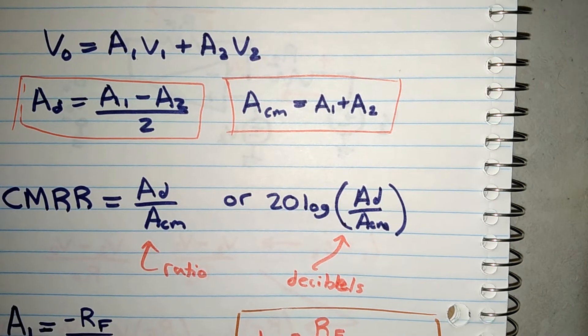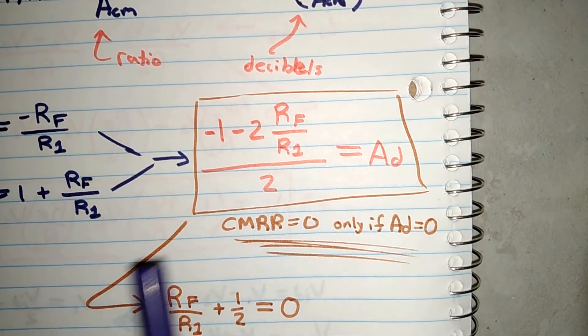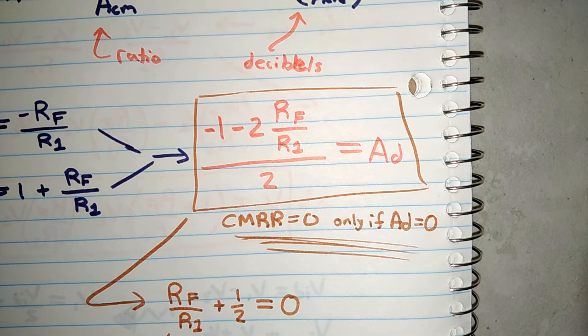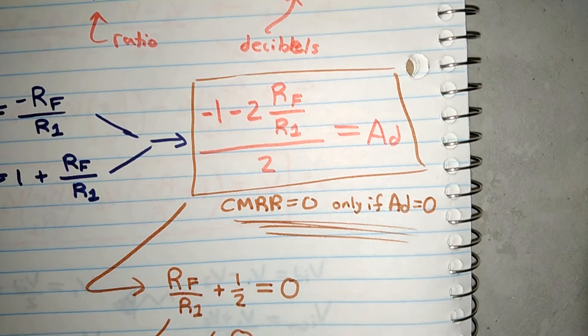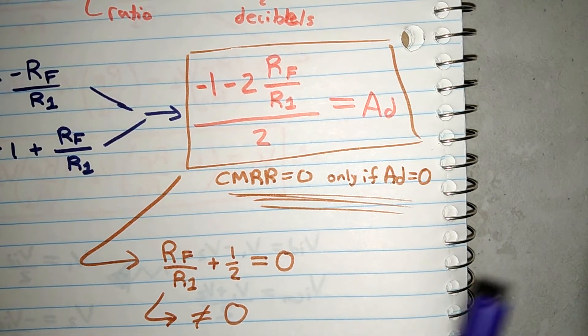But you can see that that's not possible, because when we simplify it, we're going to have RF over R1 plus 1 half must be equal to 0. Resistors are always positive, and so it will never equal 0.